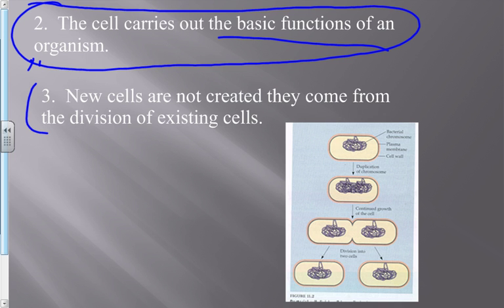You have to use special things that kill rapidly dividing cells. Chemotherapy does that — that's why your hair falls out. The cells that produce your hair are rapidly dividing, so chemo kills them too. When you're done with chemo, your hair comes back. Radiation works similarly — it kills cells immediately upon exposing them to it.